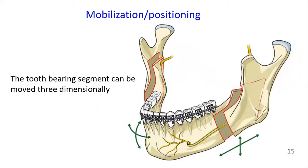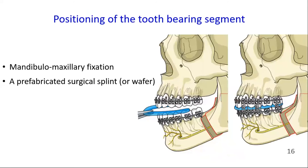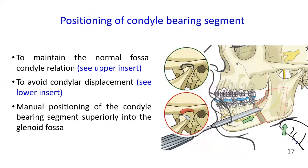After the bilateral split is completed, the large tooth-bearing segment can be moved three-dimensionally. MMF is performed to position the large tooth-bearing segment to the desired relationship with the maxilla; a prefabricated surgical splint or wafer may be used to facilitate this. Care must be taken to maintain the normal fossa-condylar relation and to avoid condylar displacement. This is usually achieved by manual positioning of the condyle-bearing segment superiorly into the glenoid fossa.